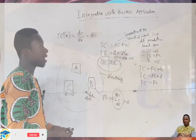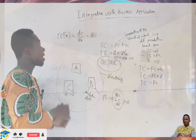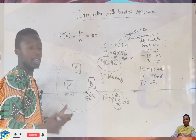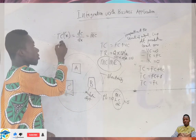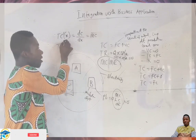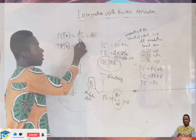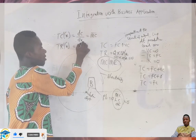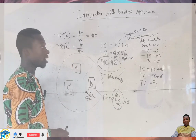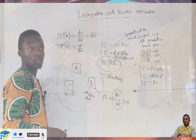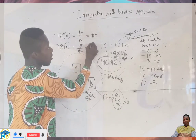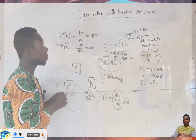This differential is what we call marginal cost. Marginal cost refers to the change in cost — it is the change in total cost. Similarly, if I have my total revenue function and differentiate it, that gives d(TR)/dx — the differential of revenue with respect to the unit x — and this establishes what we call marginal revenue.